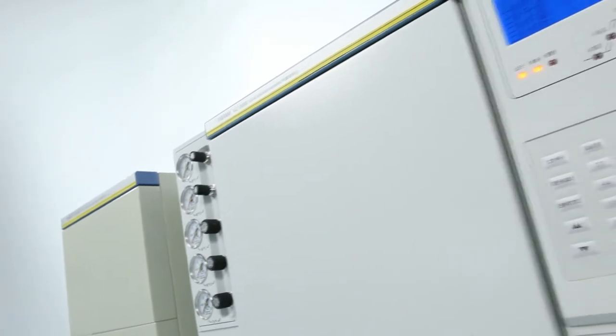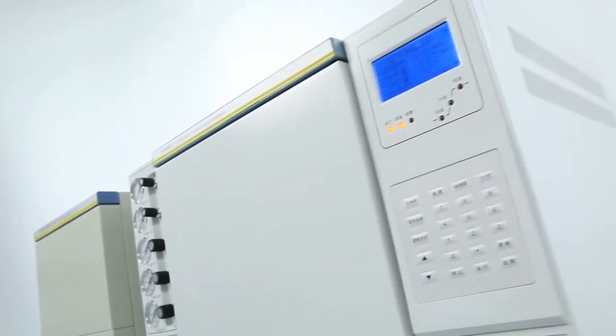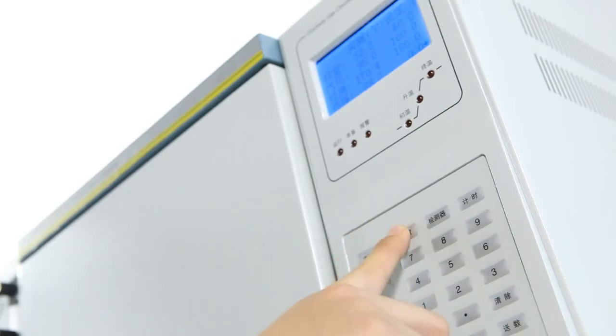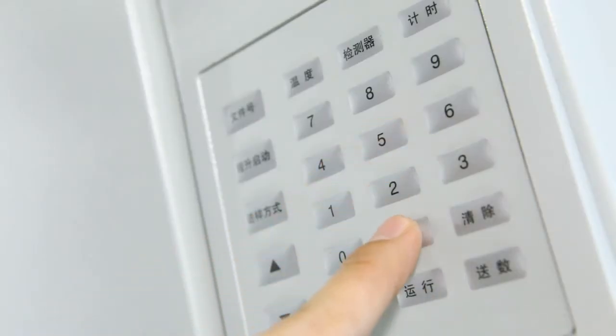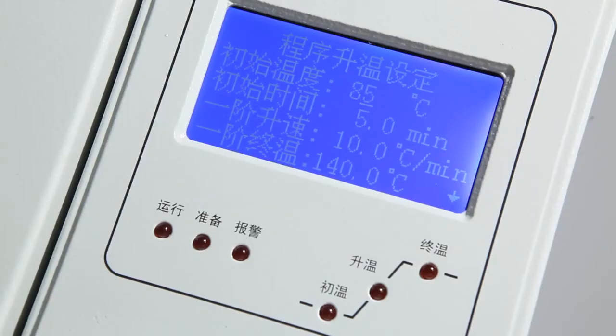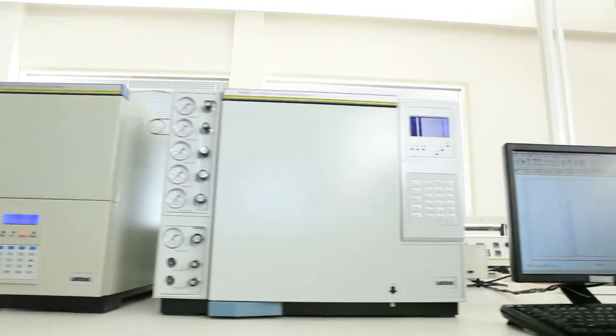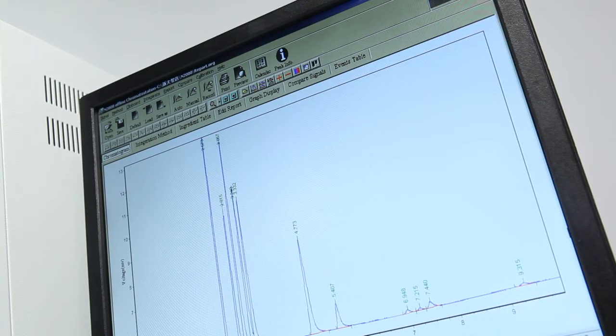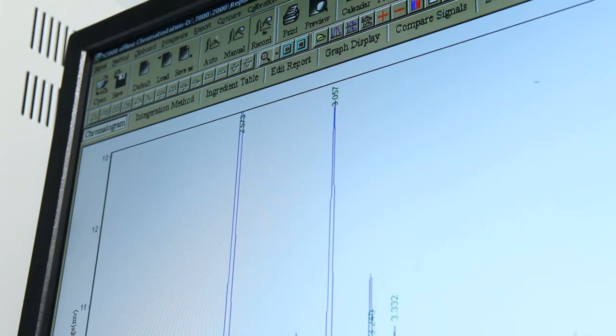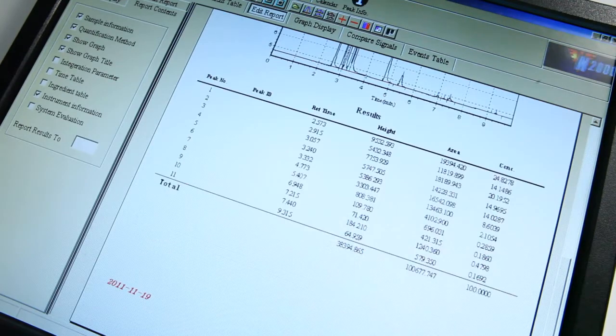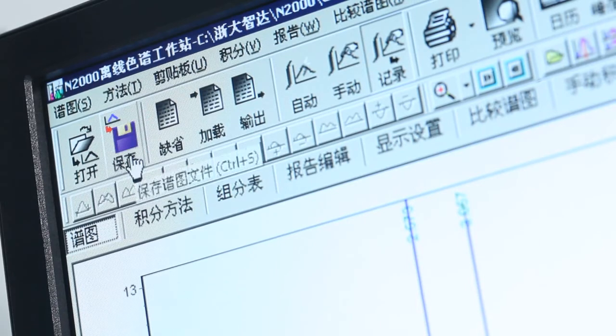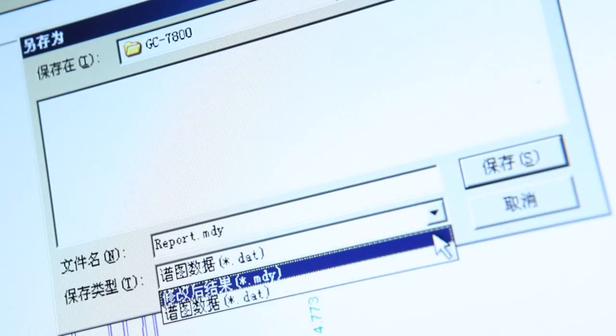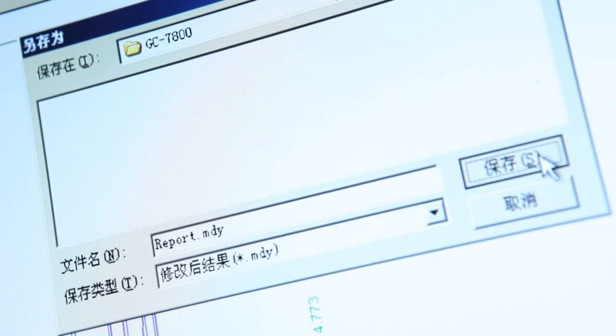The GC7800 adopts isothermal and multi-step temperature program analyzing methods, which can greatly improve the sample analyzing accuracy, the testing efficiency, and the operational convenience. The professional gas chromatography software equipped with this instrument provides powerful data reanalysis and reprocessing function. The multi-format report exporting function makes the sharing of test data easier and more convenient.